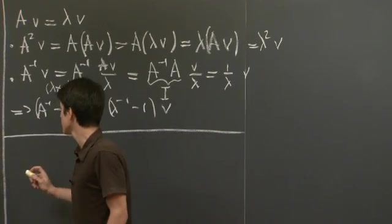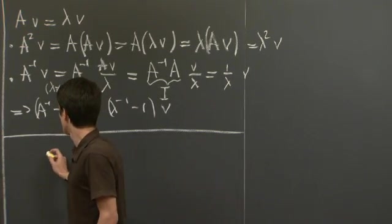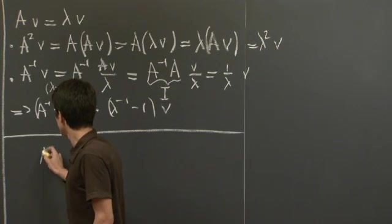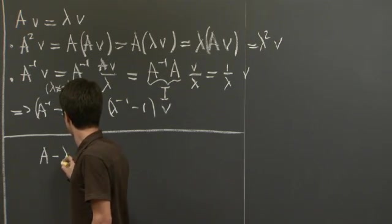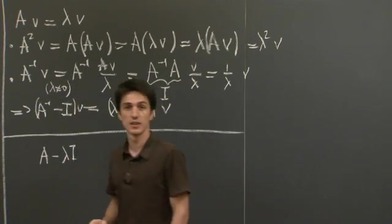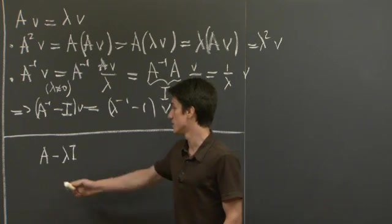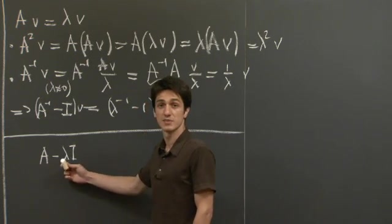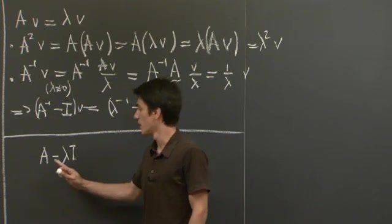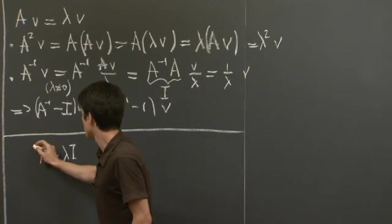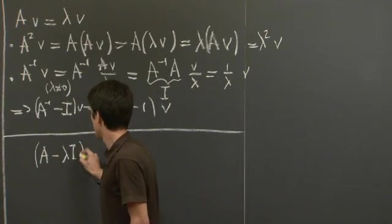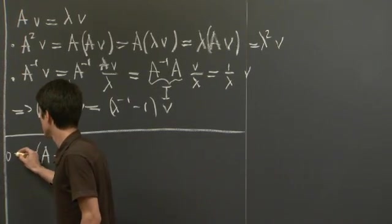So how do we find the eigenvalues? Well, what does it mean for lambda to be an eigenvalue of A? It means that the matrix A minus lambda times the identity is singular, which is precisely the case when its determinant is 0.